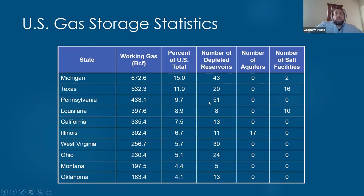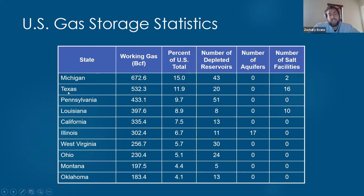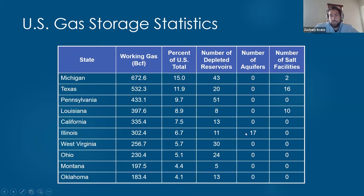This shows the top gas storage states in the U.S. You see traditional oil and gas states like Texas and Louisiana, but also Appalachian states like Michigan and Pennsylvania. What's important to focus on is the breakdown of facility types — a lot of depleted reservoirs, very few aquifers, all of which are in Illinois, and a comparably small number of salt facilities due to the localized geology required. Hard rock caverns are not used for gas storage because they don't provide the needed containment.